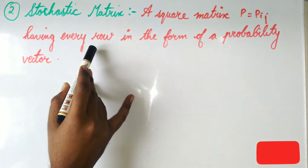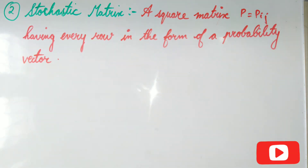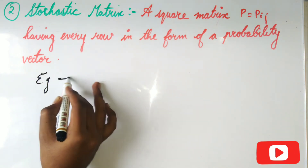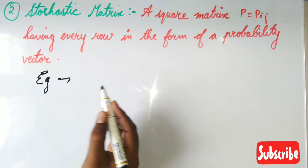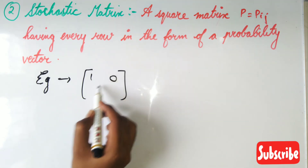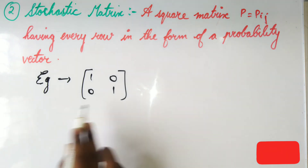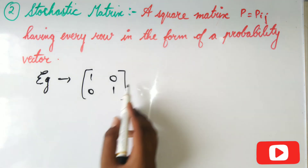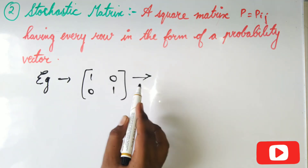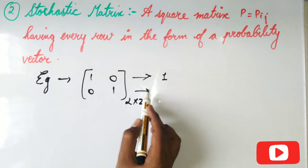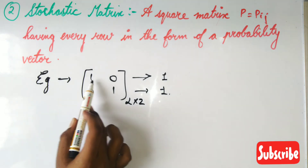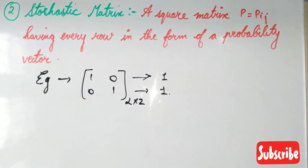A stochastic matrix has every row in the form of a probability vector — entries should be non-negative and the sum of each row should be one. For example, take the 2×2 identity matrix with rows (1, 0) and (0, 1). Adding the first row: 1 + 0 = 1. Adding the second row: 0 + 1 = 1. The entries are positive and each row sums to one. It is a square matrix, so both conditions are satisfied.